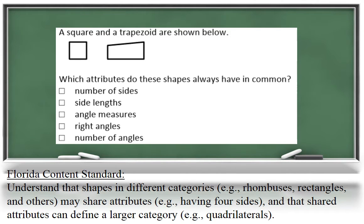Your child will explore similarities and differences between different categories of shapes. For example, this task asks to identify the common attributes between a square and a trapezoid.